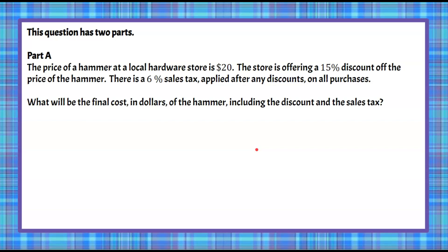Here's our question. This question has two parts. Here's Part A. The price of a hammer at a local hardware store is $20. The store is offering a 15% discount off the price of the hammer. There is also a 6% sales tax applied after any discounts on all purchases. You're asked what will be the final cost in dollars of the hammer including the discount and the sales tax. Pause the video here, do your best to answer the question, and then come back to see the solution.